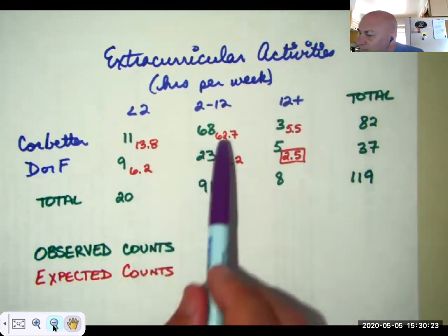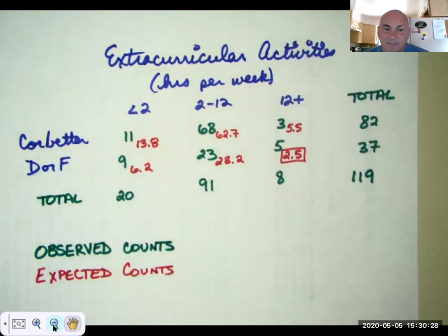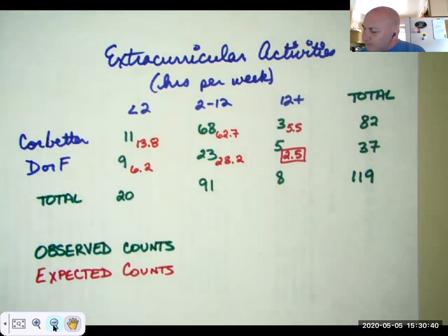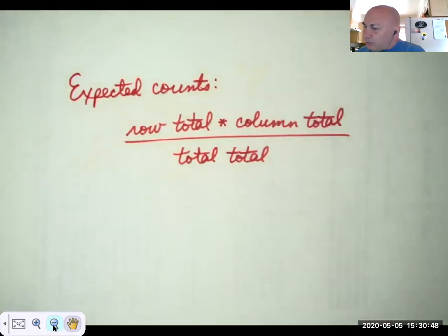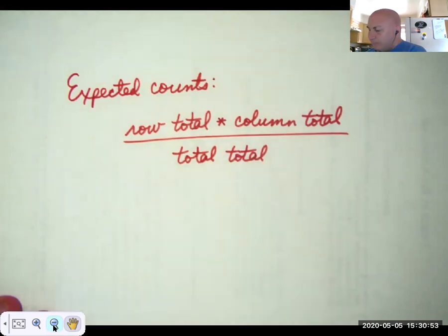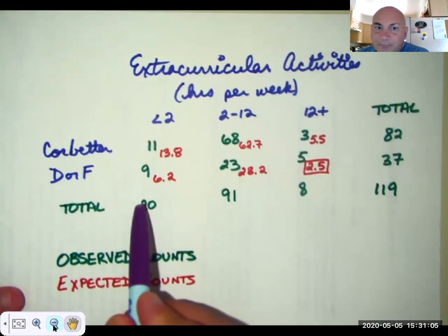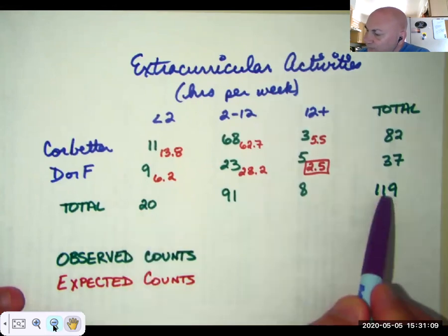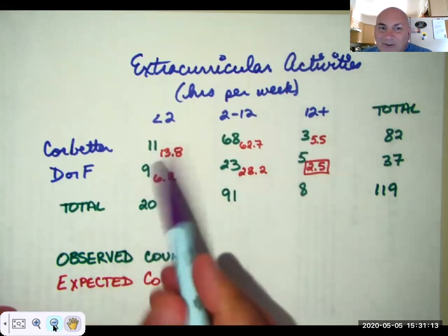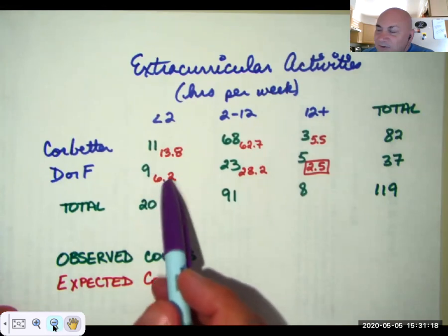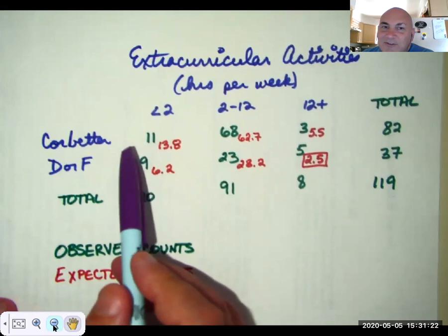The red numbers in the lower right of each cell are the expected counts. The expected counts are the row total times the column total divided by the total total. For example, the 13.8 came from the row total 82, times the column total 20, divided by the total total 119, giving 13.8. Since these are expected values, it's okay to take them to the tenths place — it makes our chi-square statistic more accurate.